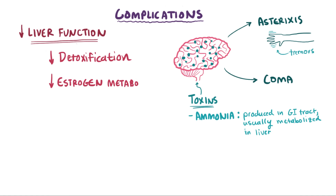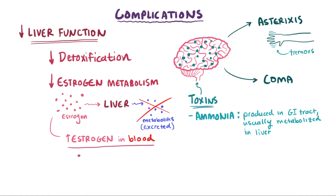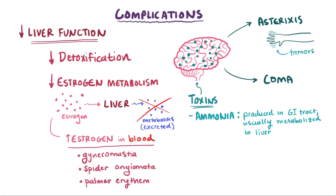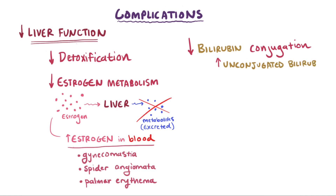Since the liver plays a big role in metabolizing estrogen into inactive metabolites that can be removed from the blood and excreted, patients can also experience complications due to increased estrogen in the blood, like gynecomastia, spider angiomata, and palmar erythema. And since the liver usually conjugates bilirubin, there will be increased unconjugated bilirubin in the blood from a less functional liver, which can lead to jaundice.